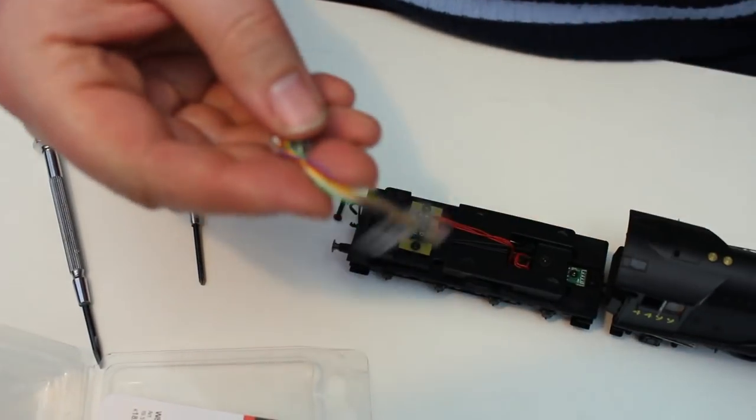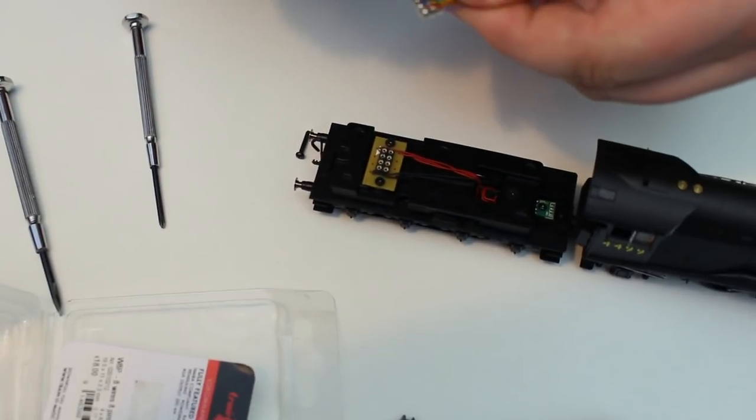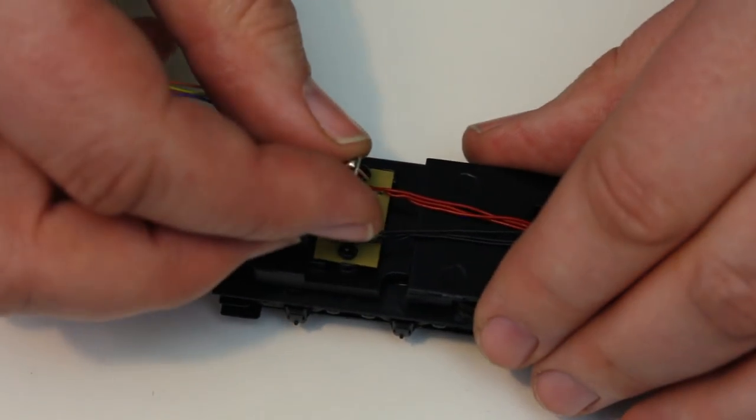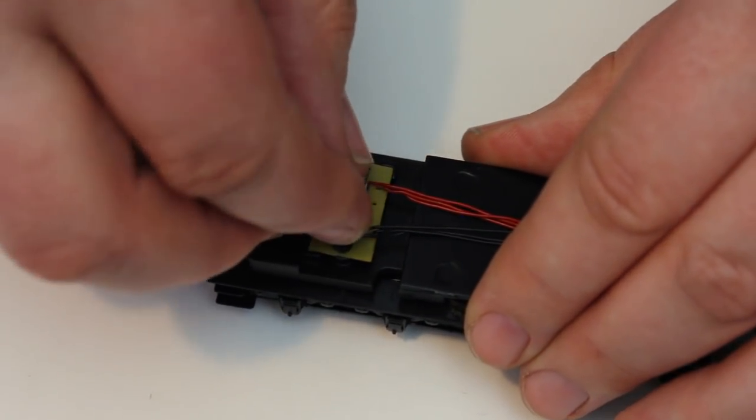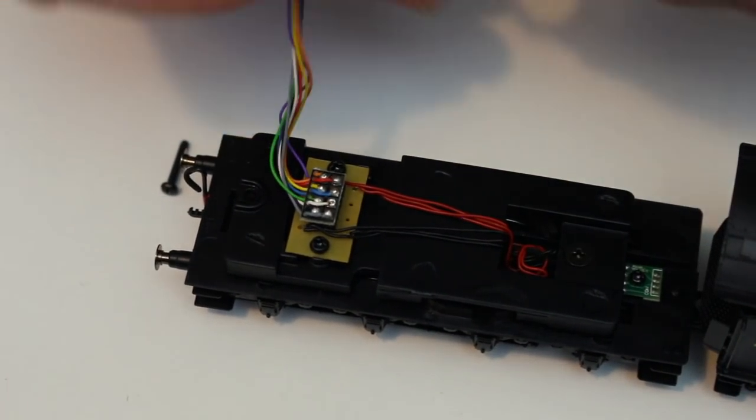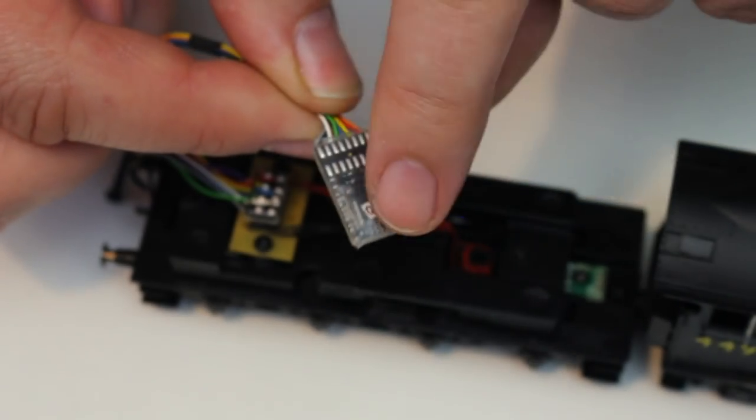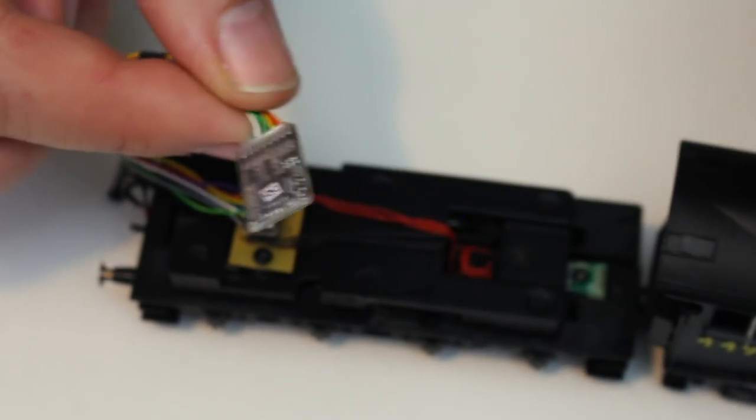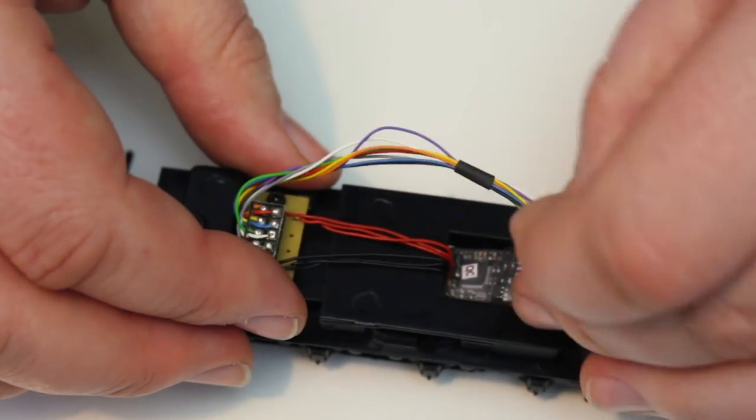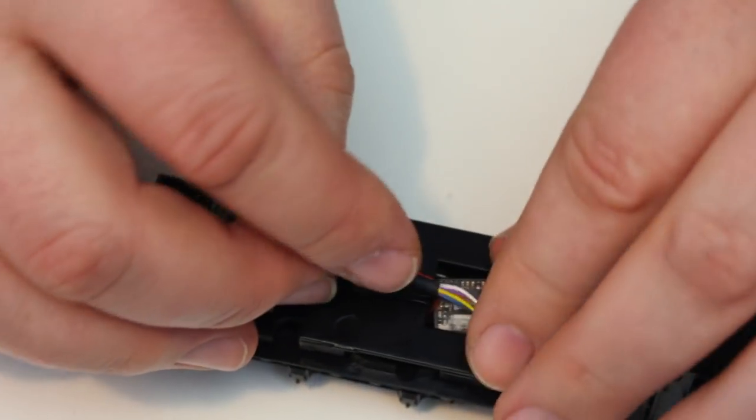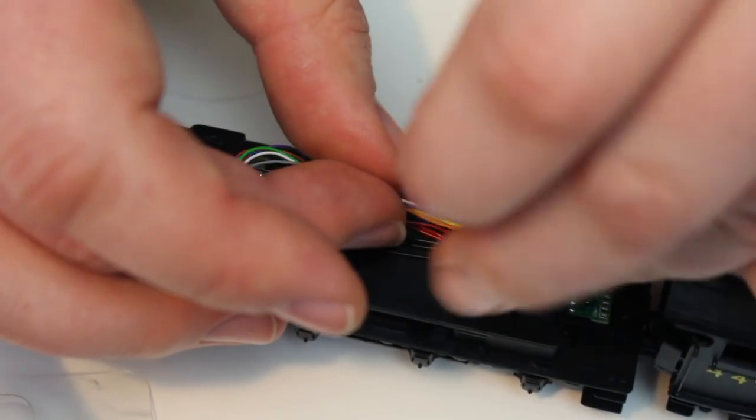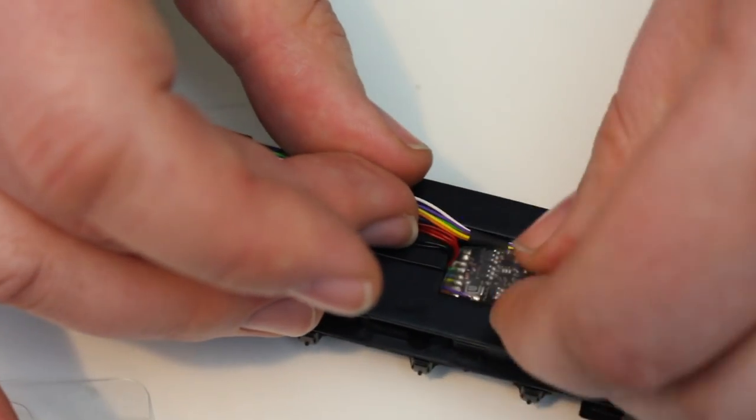And orange is pin 1 and you see there pin 1 is marked on the decoder slot. Line up the pins very carefully, push it home, make sure it's in all the way. Now the decoder is already heat shield wrapped so you don't have to worry about this shorting out on anything and what I tend to do is just to keep it in place because there's no sound decoder in there I just tend to tuck it in to where the slot underneath here where the speaker would go just to keep it in place.